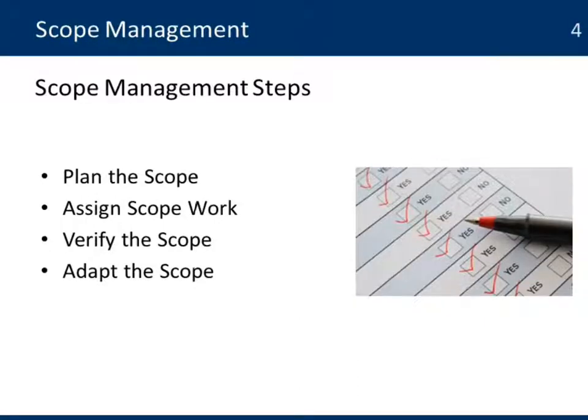These are the four steps that we need in order to manage the scope. We need to plan the scope, define all the work that we need to do, then assign that work to the different teams, individuals, or people who are going to be in charge and responsible for that work. Then verify the scope and adapt the scope if there are going to be any changes or opportunities to improve the work of the project.